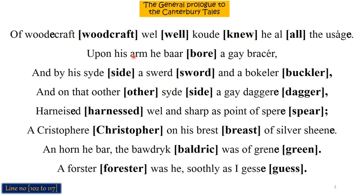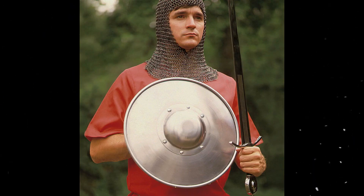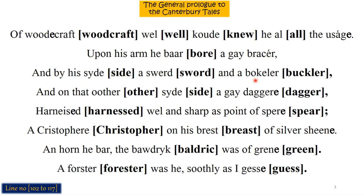The Yeoman had on his arm a gay bracer — 'gay' here means good or fine, and 'bracer' means arm guard or bazu band. He was wearing a very nice and beautiful arm guard. And by his side, a sword and a buckler. 'Buckler' means a shield — something used to stop a threat. In the 14th century, this type of shield was quite famous.